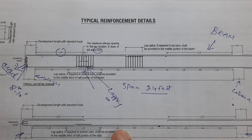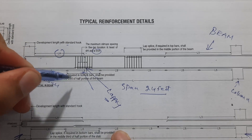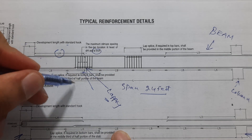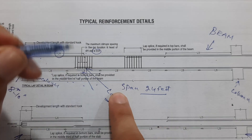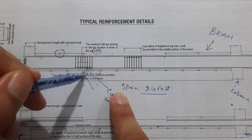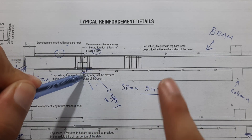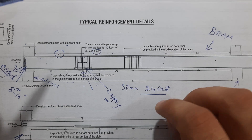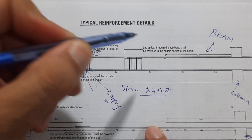Next, lap or splice if required in bottom bars shall be provided in the middle third of the lower portion of the beam. You are not allowed to provide lapping at the upper portion, but you are allowed to provide it at the bottom portion. If it is required to provide lapping, the lapping at the upper portion should be provided at the middle.